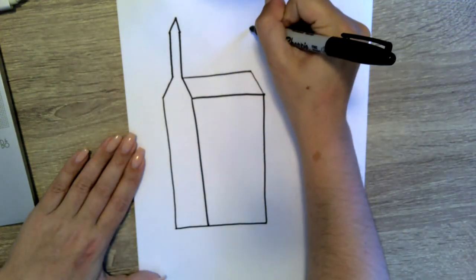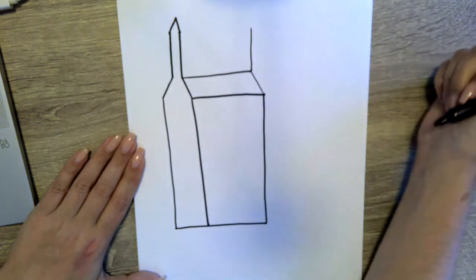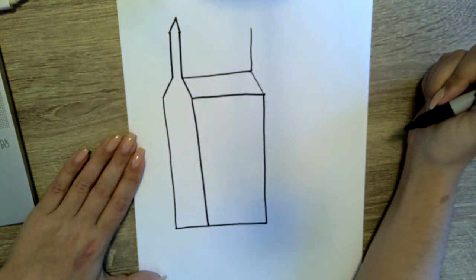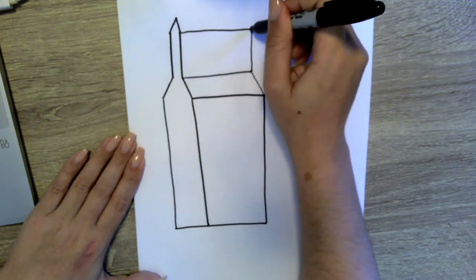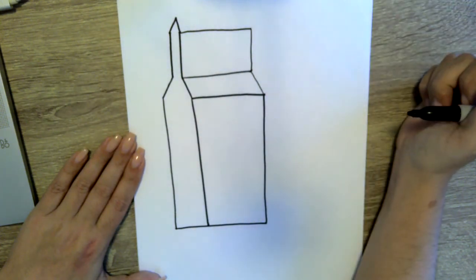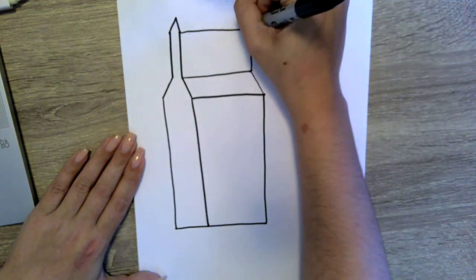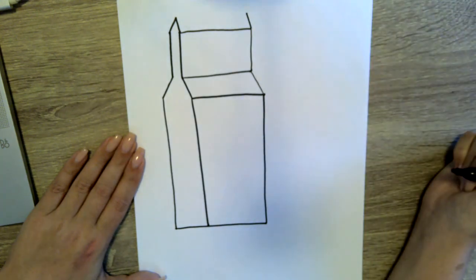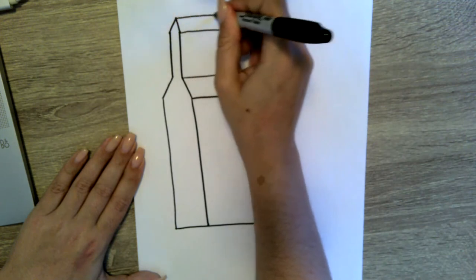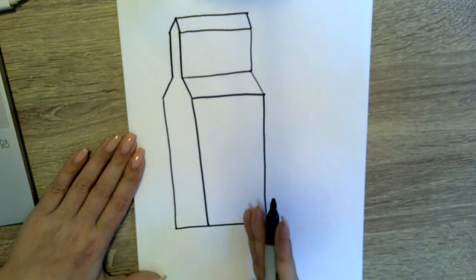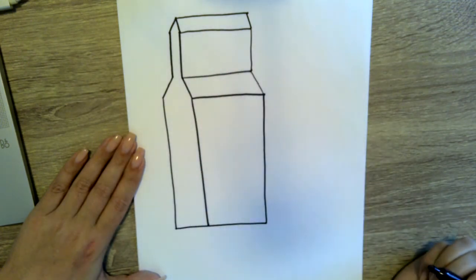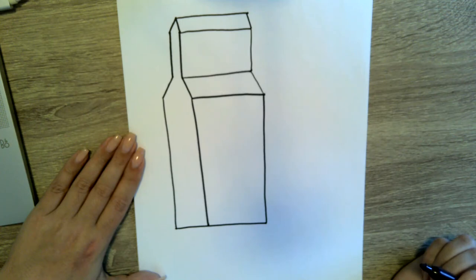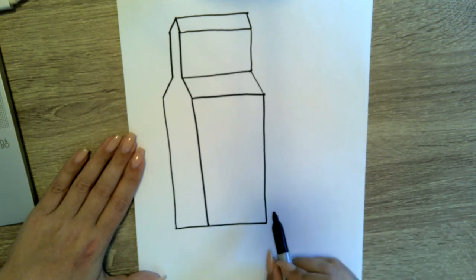Then we're going to do a straight line and connect the middle line to the outer line, and then one more diagonal and one more line connecting. A lot of straight, diagonal, straight, diagonal, and then connecting the lines. All right, that is the hardest part. You are already done the hardest part.